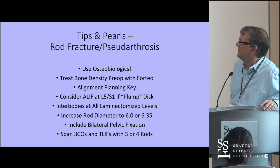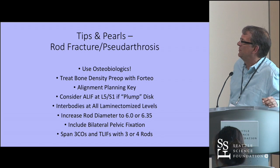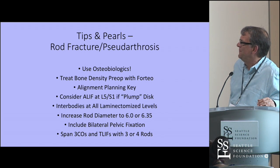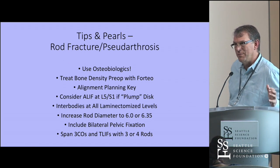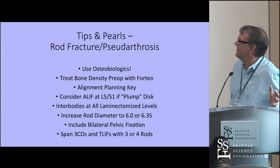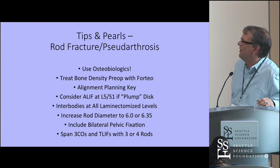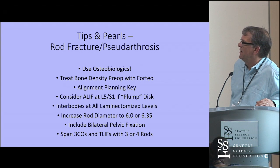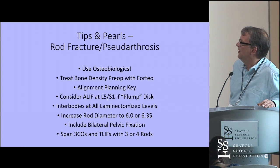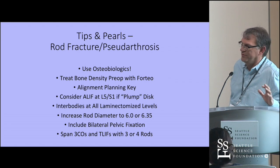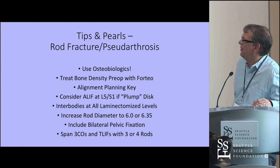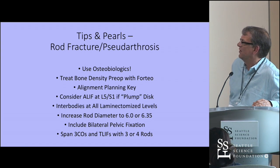Over- or under-correcting alignment creates stresses at the top of the construct and presumably within it, potentially leading to nonunion. There is evidence for this concept in proximal junctional failure, though not yet firmly established for rod failure. Biomechanically it makes good sense. Using an ALIF at L5-S1 when there is a plump disc is preferred, as it is difficult to get adequate lordosis from a posterior-only TLIF at that level.